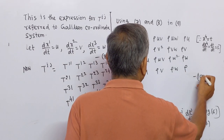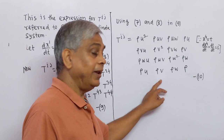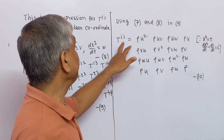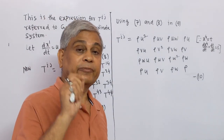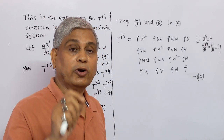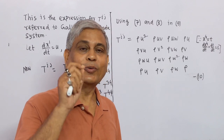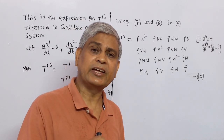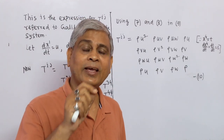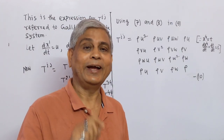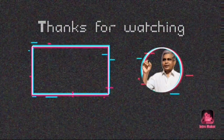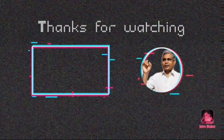This is equation (10). From equation (10) we get the different components of the energy-momentum tensor referred to the Galilean coordinate system. Thanks for watching my video. If you are satisfied with my presentation and contents, then please click on the like button and do subscribe to my YouTube channel. Thank you.